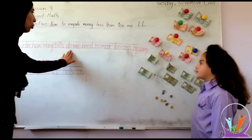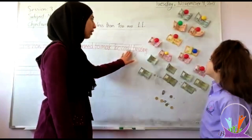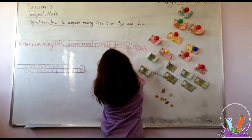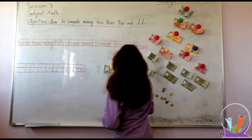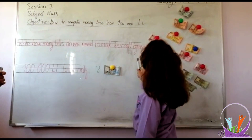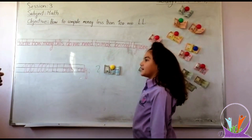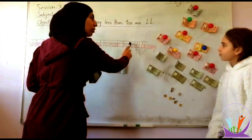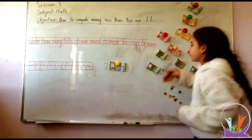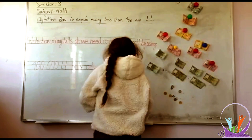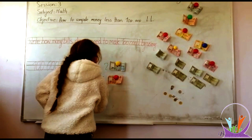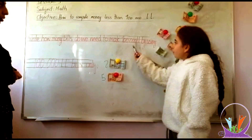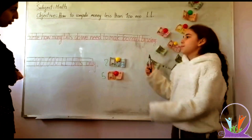How many bills do we need to make 100,000 PYRB? 15,000 PYRB is equal to 100,000 PYRB. Very good. Use another one to make 100,000 PYRB. So 20,000 PYRB equals 100,000 PYRB. Very good.